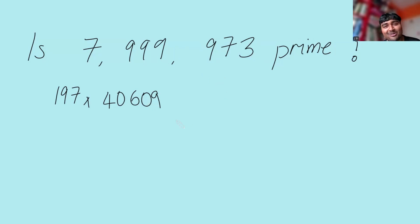That is not how I would solve this problem. Now it is true to say that 197 times 40,609 gives you this number here, but of course that's not how we're expected to solve it, and I definitely didn't spot that 197 is a factor of this number.